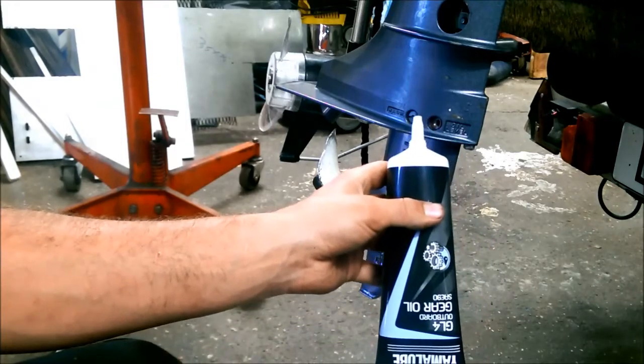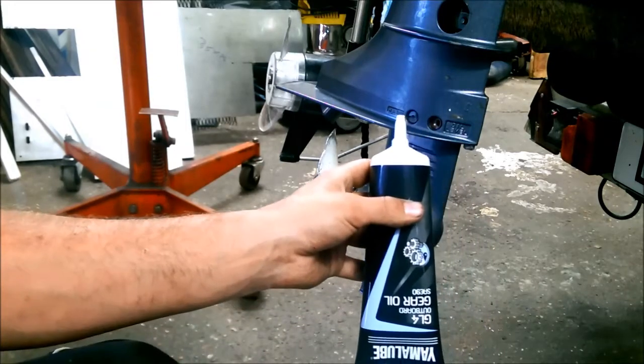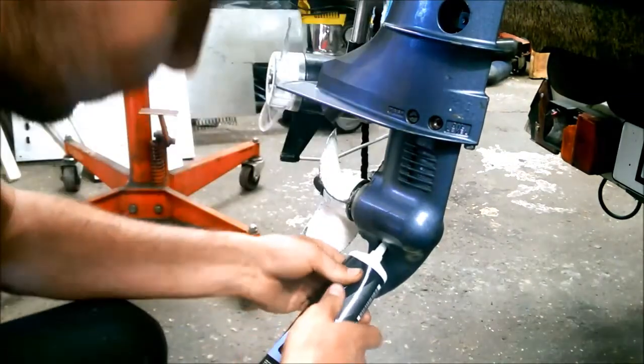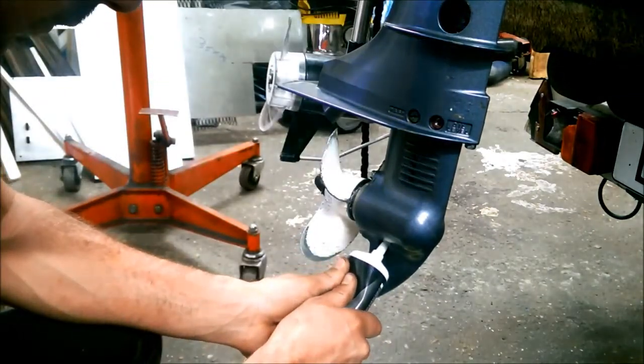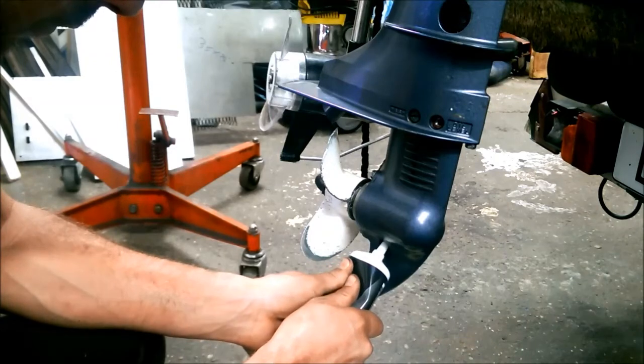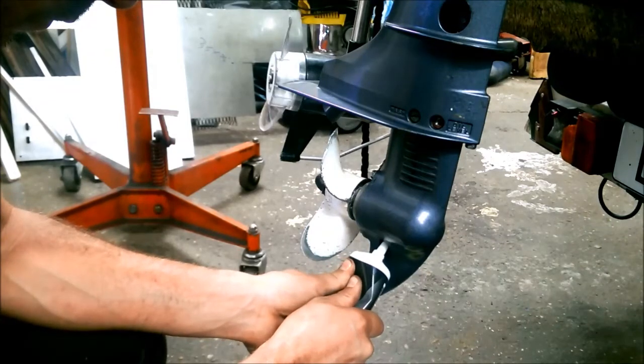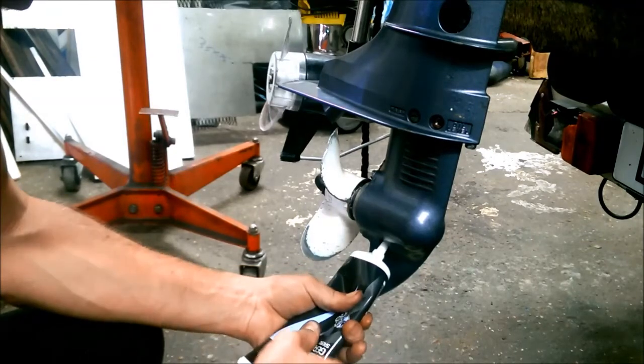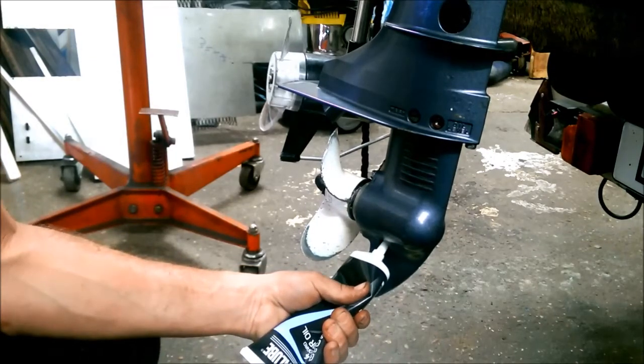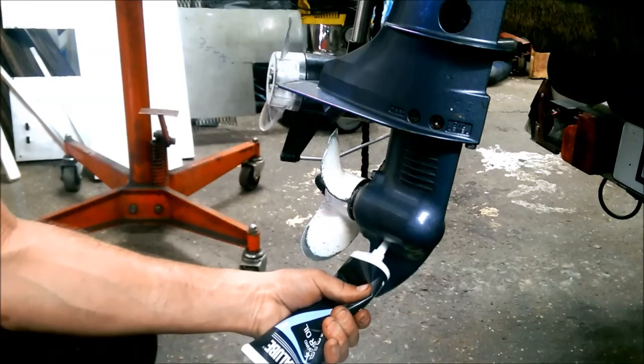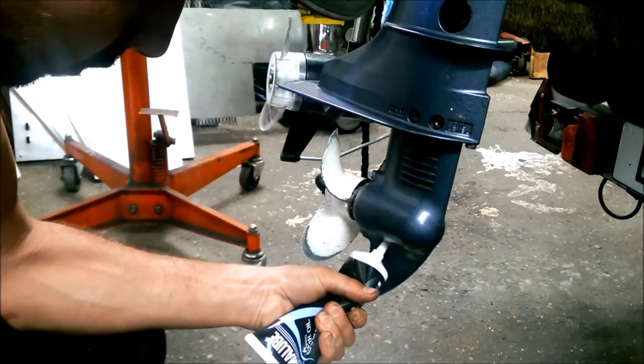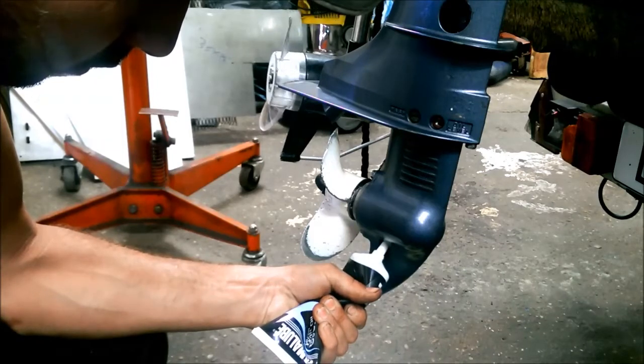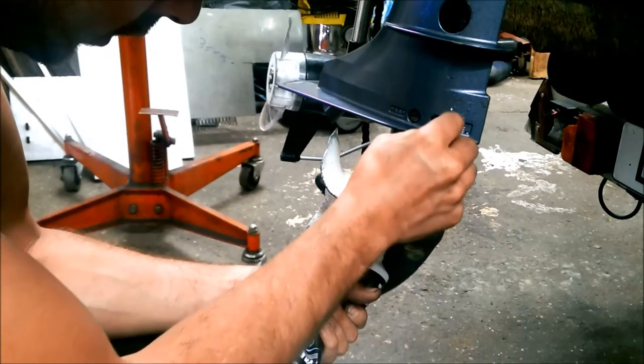This is gear oil for the tail section. Squeeze the oil in until it comes out at the top, like this.